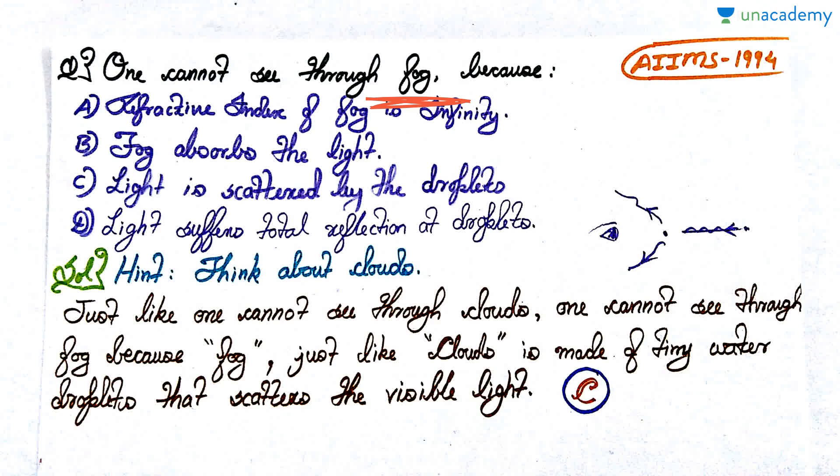The question is: One cannot see through fog. In the morning during winters, a whitish layer descends near the surface of the earth and visibility gets damaged really badly, and you cannot see through that cloudy layer. That cloudy whitish layer is actually called fog. Fog is called kohara in Hindi. Why cannot we see through the fog? The options are: refractive index of the fog is infinity, fog absorbs the light, light is scattered by the droplets, or light suffers total reflection at the droplets. It's a theoretical question. As usual, pause the video, attempt the question, and then we'll discuss the solution.